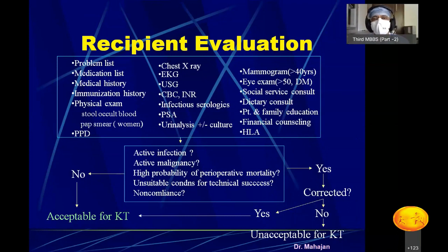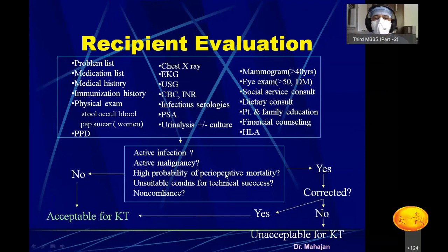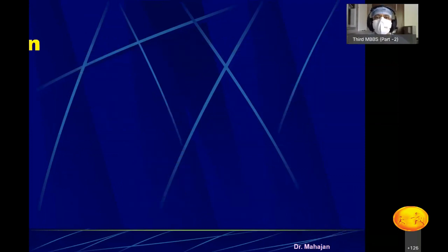Such a comprehensive evaluation list is important because the surgery is very major, and even if the surgery goes well, there are multiple factors that can lead to rejection or complications after kidney transplantation. After all routine investigations, you check for active infection, active malignancy, co-morbid conditions, and conditions unsuitable for technical success — such as uncontrolled diabetes, atherosclerosis of vessels, and patient non-compliance. If no such factors are present, accept the patient for kidney transplantation; otherwise, correct the conditions first.